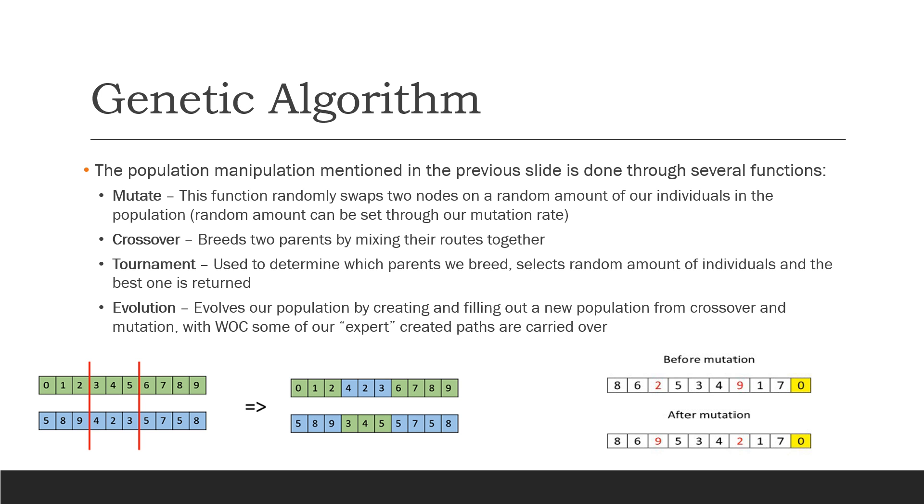The population manipulation was done through several functions: mutate, crossover, tournament, and evolution. Mutating randomly swaps two nodes on a random amount of individuals in the population. This can be set through our mutation rate, which I've determined should be 0.4 for best performance. In the bottom right, you can see an example of before mutation versus after. This path was chosen to be mutated and two random nodes were selected, being two and nine, and then they swapped positions to give more variety in our populations.